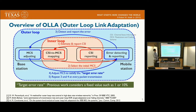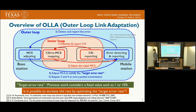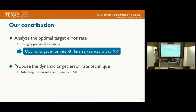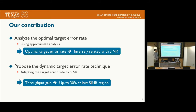The problem we focus on is this target error rate. A lot of previous work considers a fixed value such as 1% or 10%, but the question is: can we do better with this target error rate? The answer is yes. There are two contributions in our work. First, we analyze the optimal target error rate using approximate analysis, and the results show that the optimal target error rate is inversely related with SINR. Second, we propose a dynamic target error rate technique that adapts the target error rate to the SINR value. Simulation results show that the throughput gain can be up to 30% at the low SINR region.